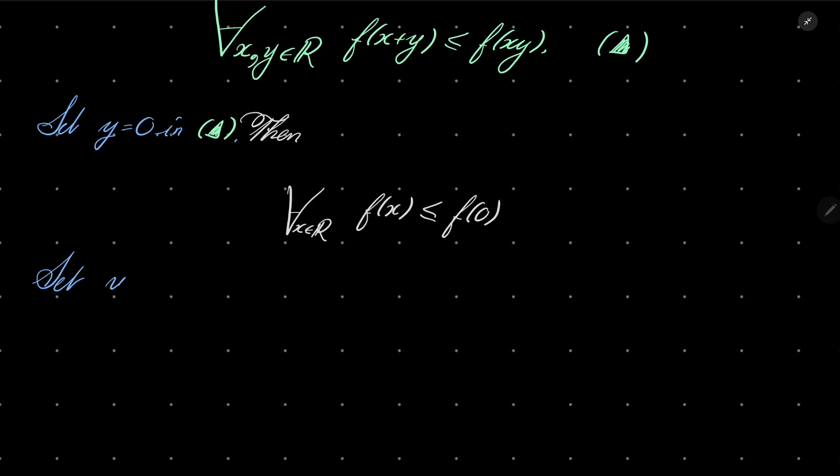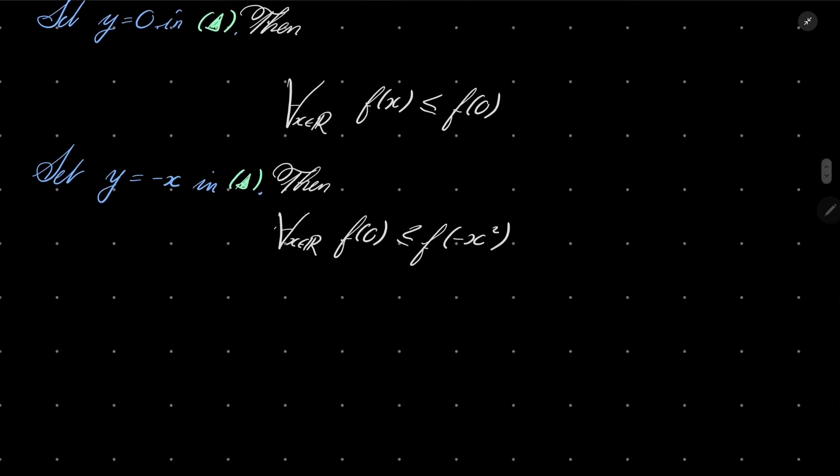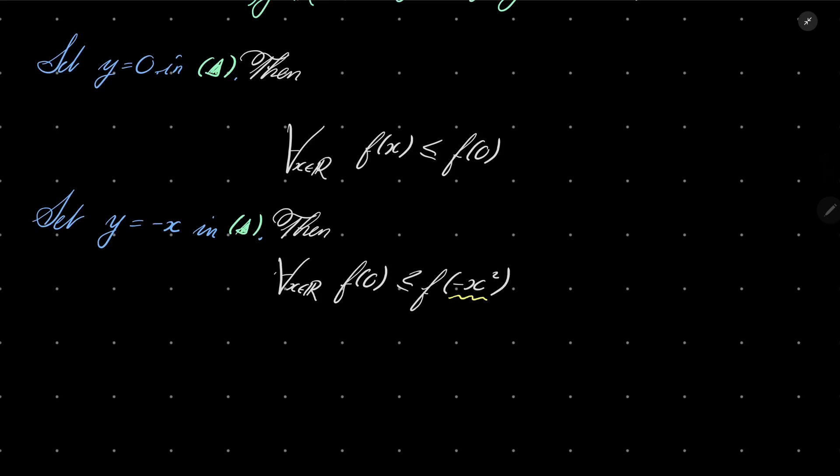Now let's set y to be -x in our condition green triangle. Then we have f(0) on the left hand side, and on the right hand side we have f(-x²). That also holds for every real number x. But here we have -x². Every non-positive number can be written as -x² for some real number x. So that means that in fact, for every non-positive z, f(0) is less than or equal to f(z).